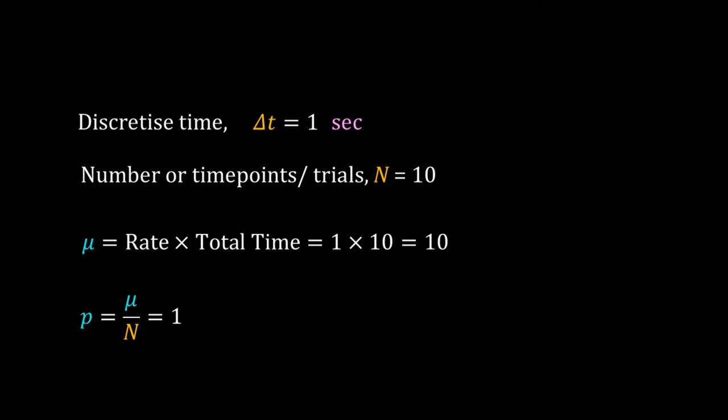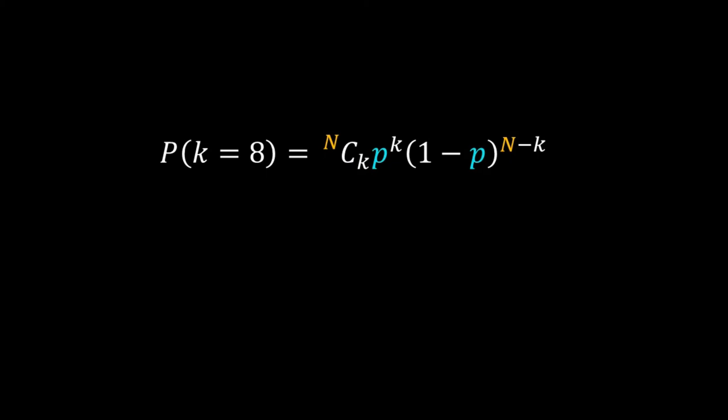Now we are ready to use the PMF of binomial distribution. The probability that 8 copies of mRNA will be made in 10 seconds is given by the PMF: n choose k, p to the power k, times 1 minus p to the power n minus k. Here k is 8, n is 10, and p is 1. Plugging those values we get 0. That is an unexpected and unrealistic answer.